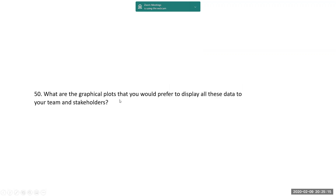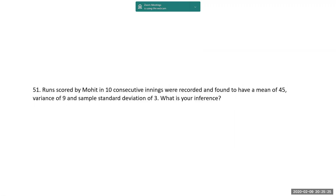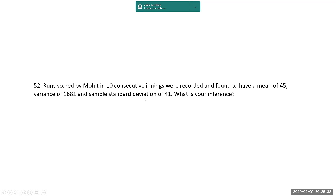What are the graphical plots? That is charts — X-bar R chart and range R chart. Run scored by 10 consecutive innings were recorded to have a mean of 45, variance of 9, and sample deviation of 3. What is your inference? Please do it as homework. Another problem: the mean is the same but the standard deviation is 41. What does it mean? It is bad.